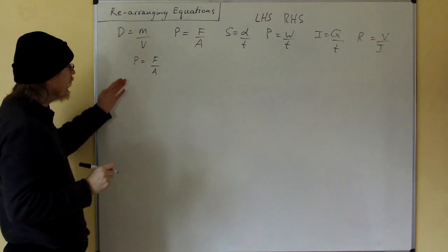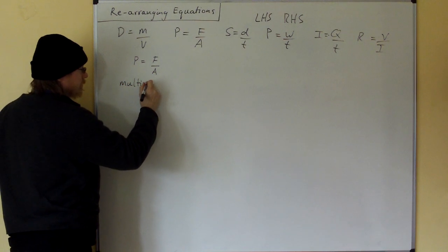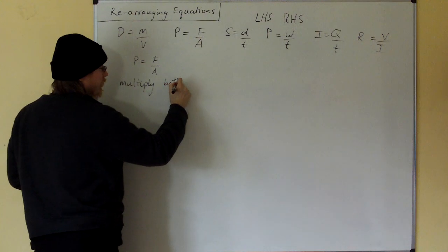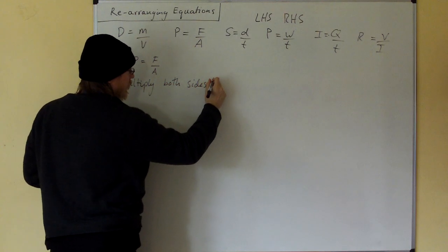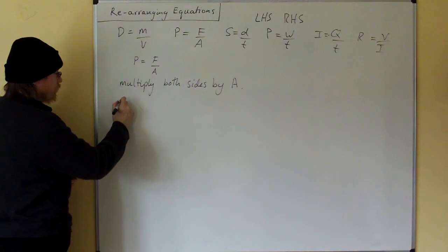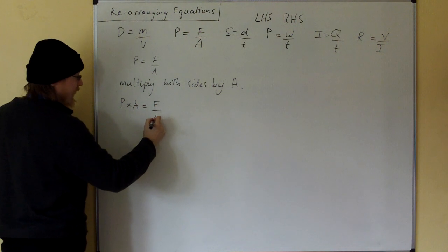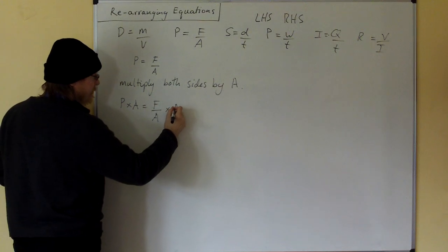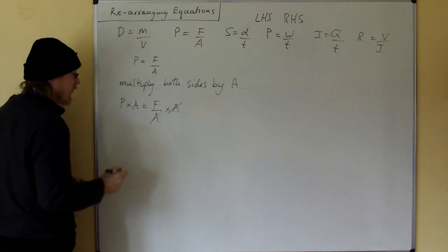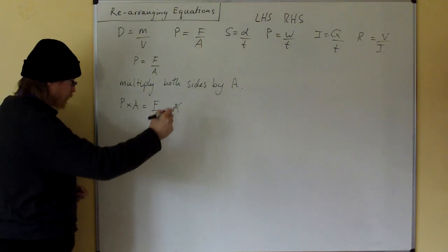All right. What we're going to do is multiply both sides by A. OK? It's very simple. Pressure times area equals force over area times area. The two areas cancel, and we've done it. We've got force equals pressure times area.